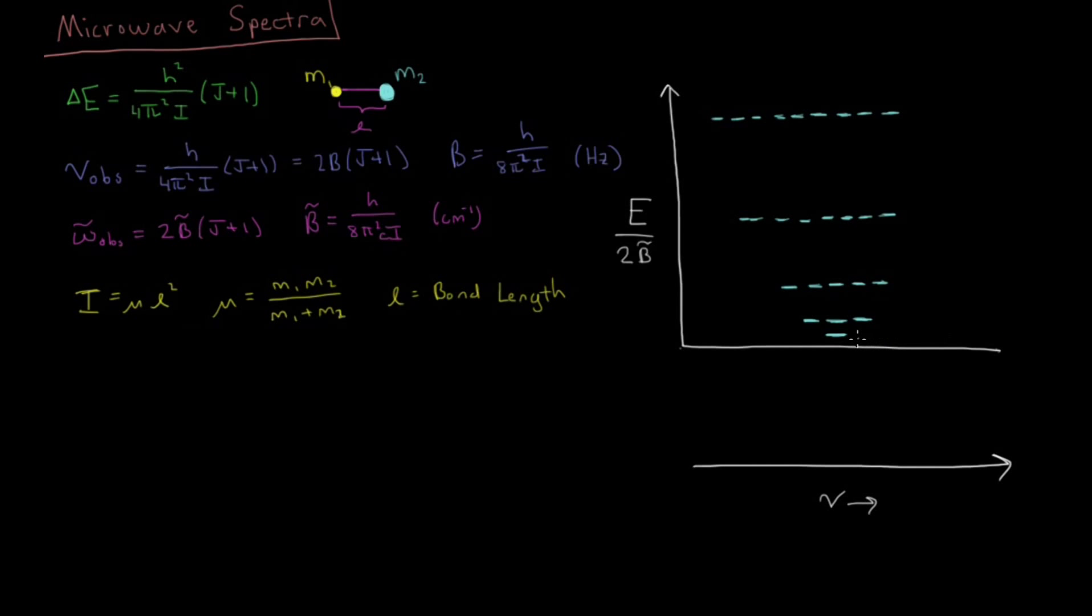And as we said, we have j equals 0, 1, 2, 3, 4 for these energy levels.